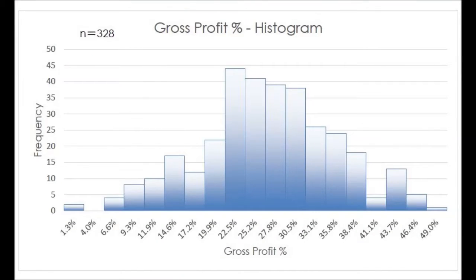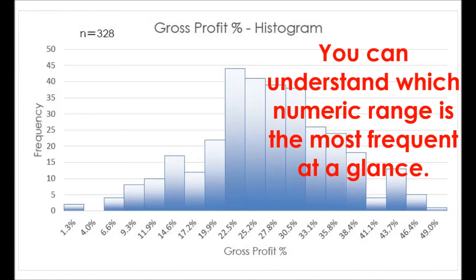Next is a histogram. This diagram represents the occurrence frequency of one data group graphically. You can understand which numeric range is the most frequent at a glance.